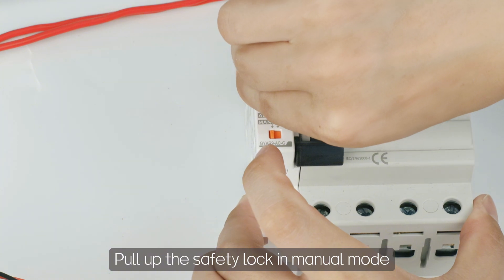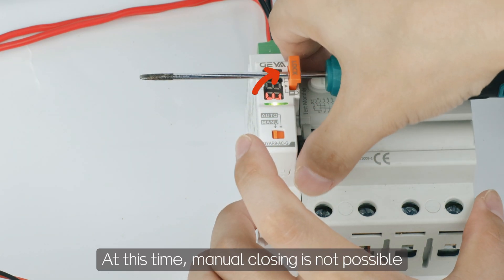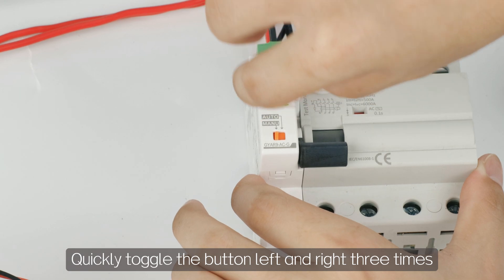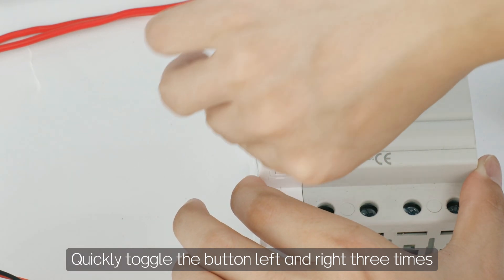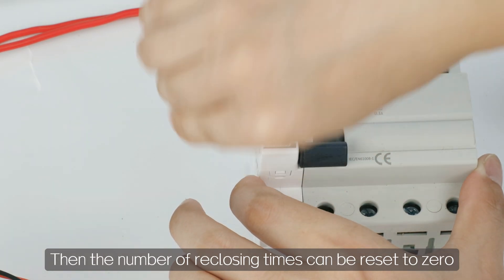Pull up the safety lock in manual mode. At this time, manual closing is not possible. Quickly toggle the button left and right three times. Then the number of reclosing times can be reset to zero.